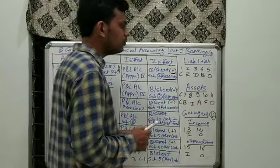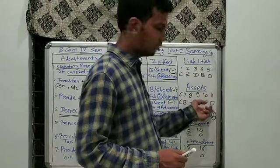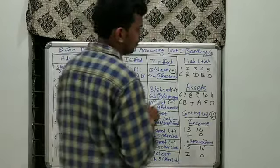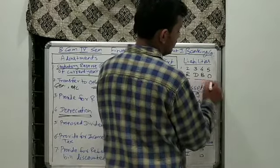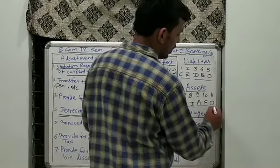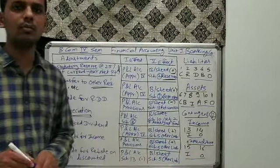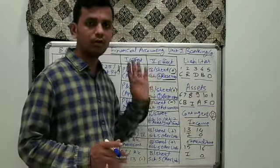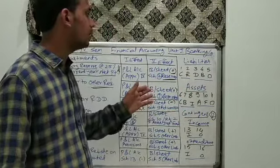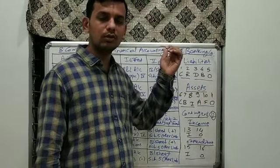The mnemonic technique to remember all schedules is: CRDBO for liabilities — Capital, Reserves, Deposits, Borrowings, Other liabilities; CBIAF for assets — Cash, Bank, Investment, Advances, Fixed assets, Other assets; then IO IO for income and expenditure schedules. We can split and remember it this way, or practice until the schedule numbers are printed in our memory.